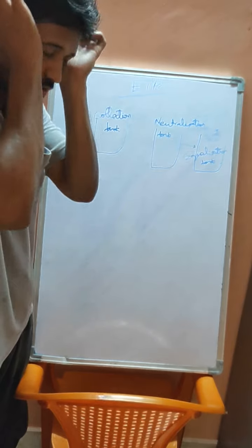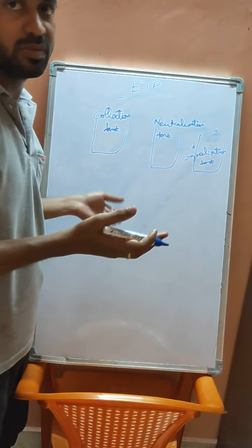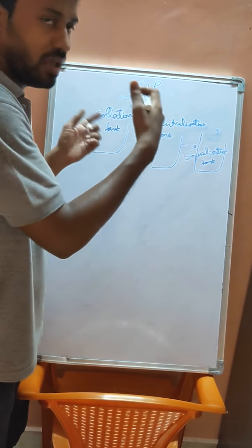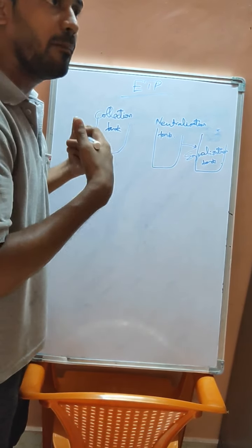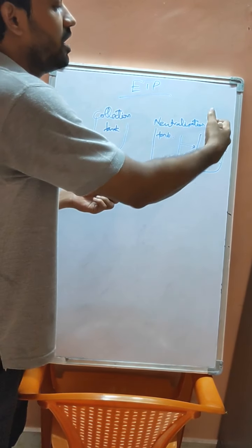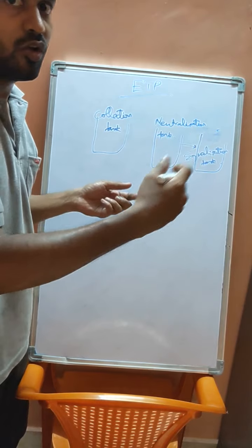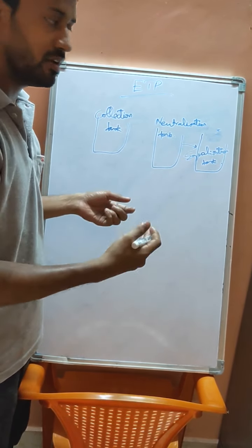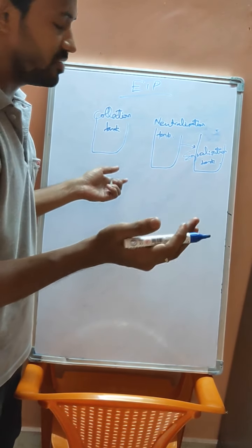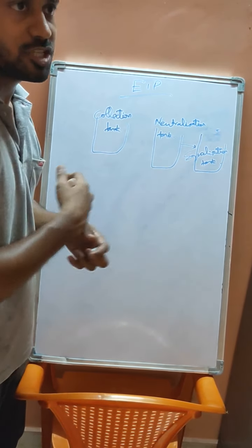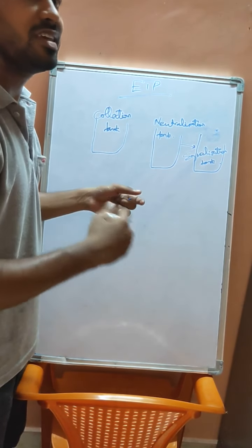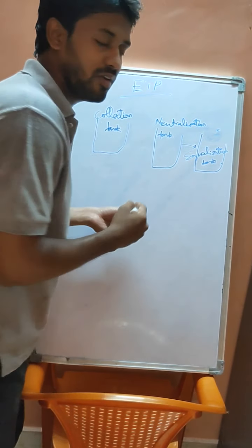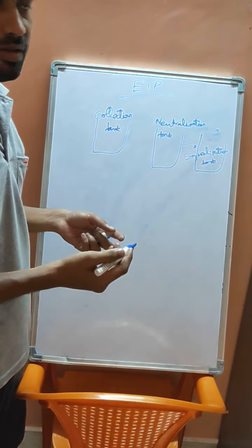After neutralization, the effluent goes to the equalization tank. The equalization tank receives feed from various sources and tanks. Its purpose is to uniform the flow rate for further treatment — it distributes the effluent uniformly in a steady-state manner before sending it on for further processing.